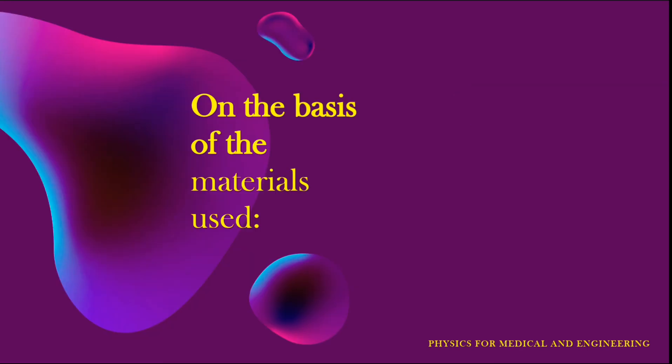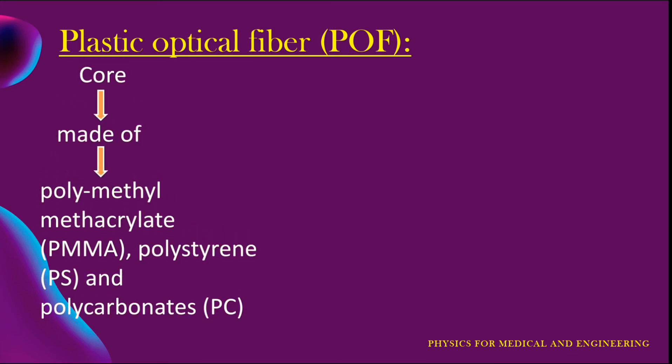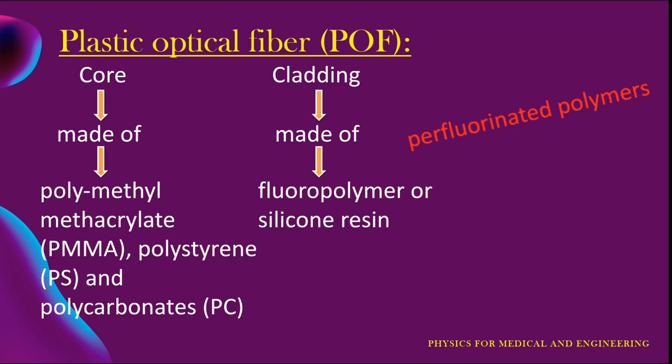On the basis of material used, it is classified into two types: plastic optical fiber and glass fiber. The first one is plastic optical fibers. Plastic optical fibers are made of polymethyl methacrylate, polystyrene, and polycarbonate core and fluoropolymer or silicon resin cladding. Today perfluorinated polymers are used. They have transmission windows in the visible region and the transmission losses due to the absorption and scattering of light are very high. Therefore, plastic optical fiber can only be used for short distance data transmission or application up to 100 meter.